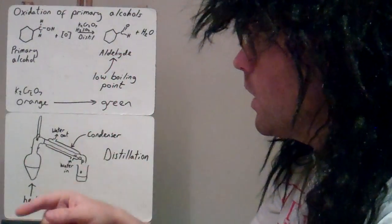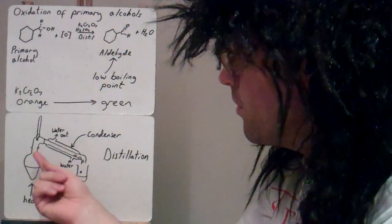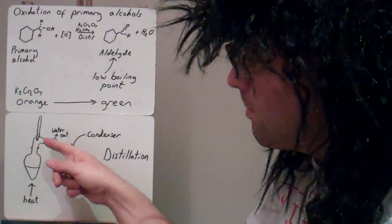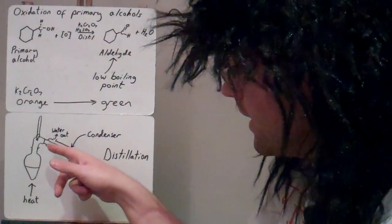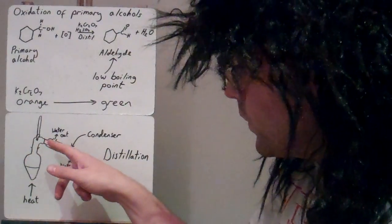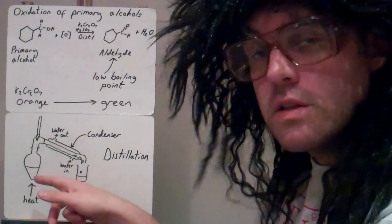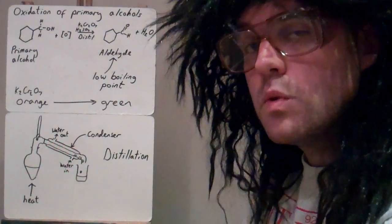And the aldehyde actually has a lower boiling point than the alcohol so that evaporates, goes up here and then condenses. And because it condenses on a downward slope like here, as it condenses it turns back into a liquid and the liquid will roll down here and drip in here. So as soon as the aldehyde is made it's separated, that's what distillation does.